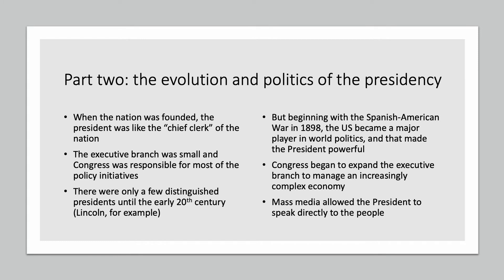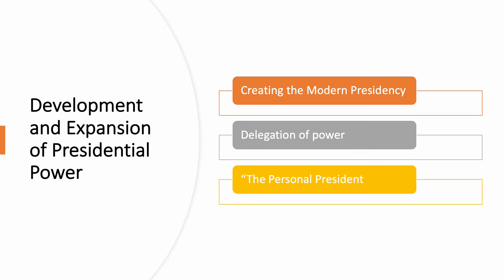The second thing that happened is Congress began to expand the executive branch, beginning around the 1890s but really taking off in the 1930s under Franklin Roosevelt. Congress expanded the executive branch and put the president in charge of many agencies managing an increasingly large and complex economy. Thirdly, the invention of mass media gave the president a huge advantage over Congress — the president can speak directly to the public through radio, then television, and now through social media. So the president connected personally with the population in ways that Congress couldn't.